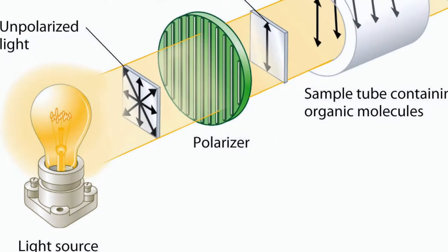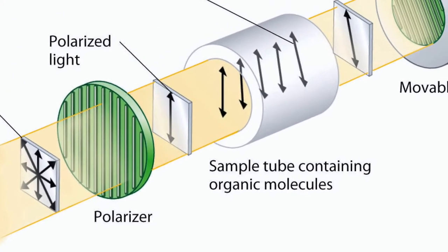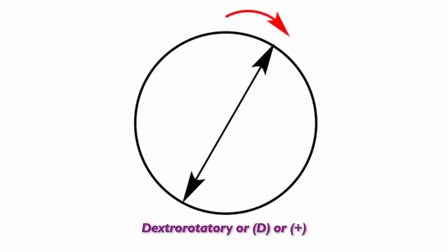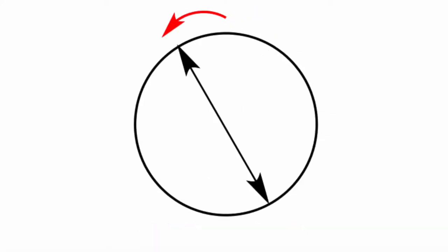Depending on how its groups are arranged, an enantiomer can rotate light clockwise or counterclockwise from the viewpoint of the observer. If clockwise, the enantiomer is said to be dextrorotatory. If counterclockwise, it is said to be levorotatory.